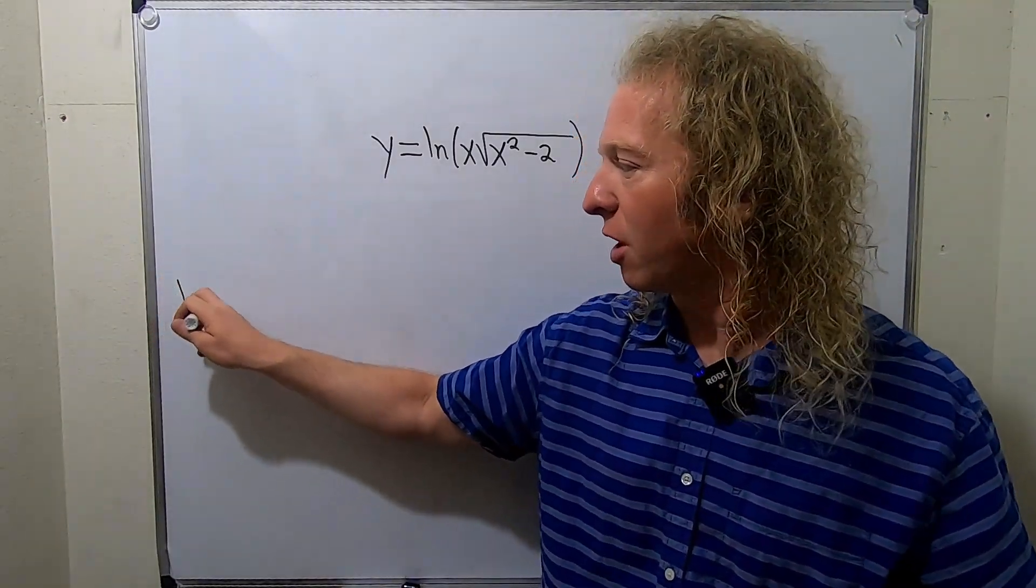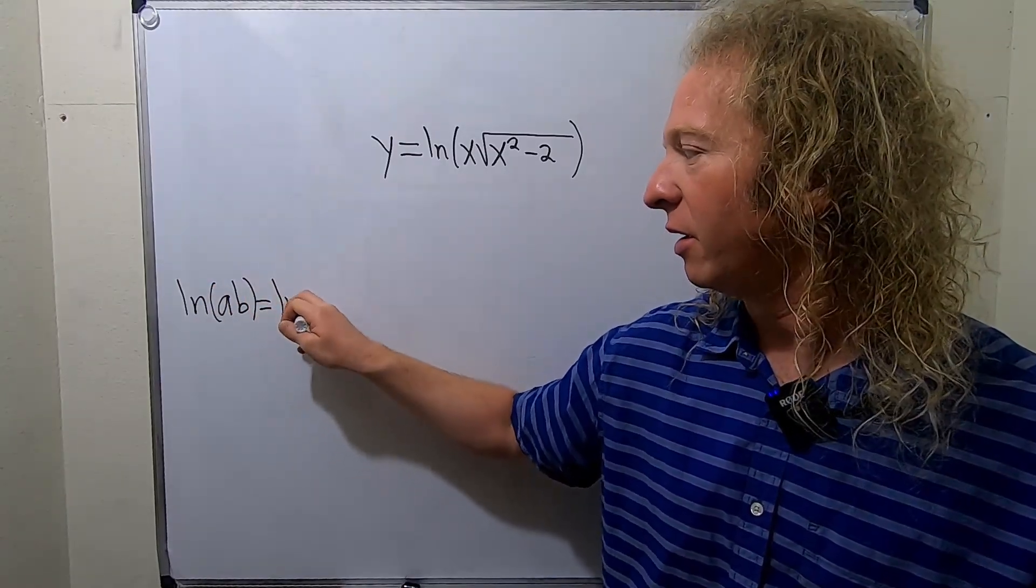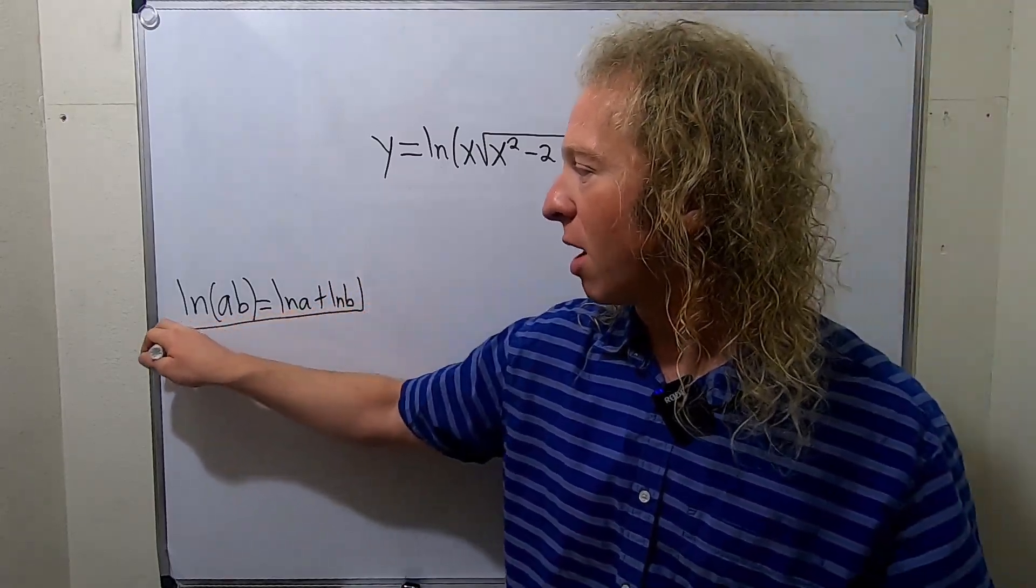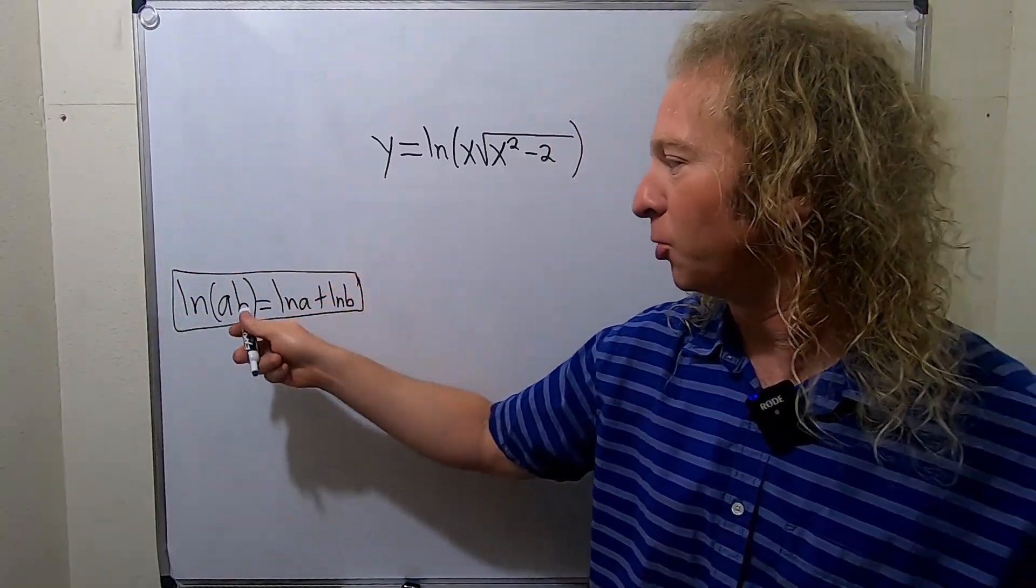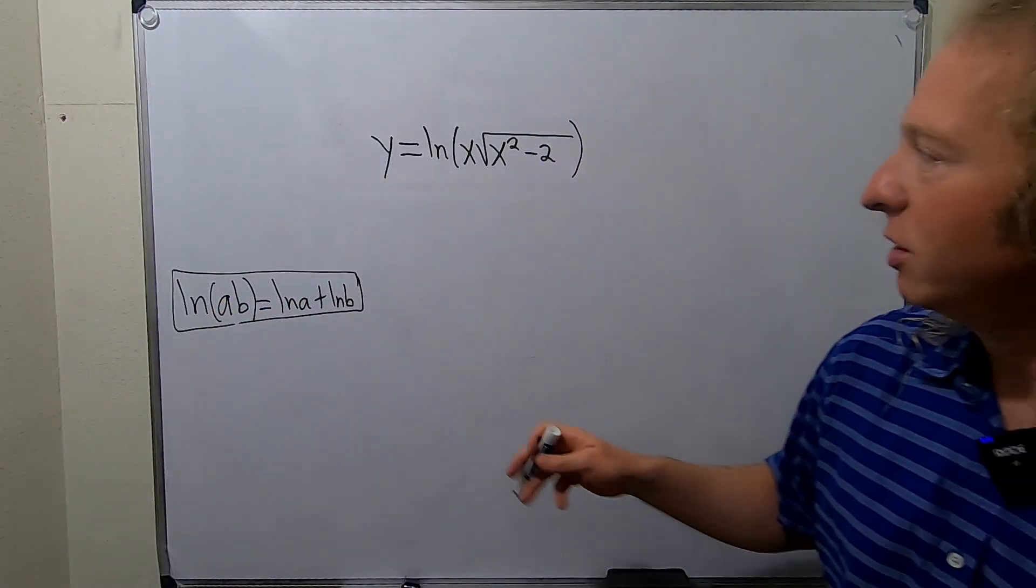Recall if you have the natural log of a times b, this is equal to the natural log of a plus the natural log of b. This is one of the key properties of logarithms. The multiplication turns into addition. It rhymes. So that's what we're going to do here.